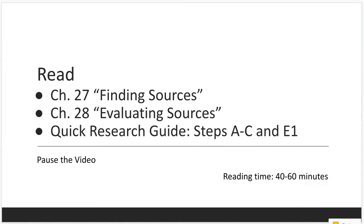All right, lastly, what I would say right now is go ahead and read chapters 27 and 28, which are going to cover how to find sources and how to evaluate them. And then also read the quick research guide steps A through C and E1, which will help you and kind of summarize what you're reading in chapters 27 through 28 and up to now. So it's a bit of reading, and once you've finished it, go ahead and come back and start on part four, where I'll walk you through in more detail how to find sources for this essay.